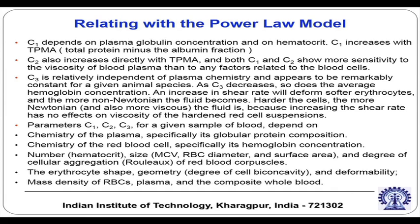C2 also increases directly with total plasma minus albumin (TPMA), and both C1 and C2 show more sensitivity to the viscosity of the blood plasma than to any other factors related to blood cells. C3 is relatively independent of plasma chemistry and appears to be remarkably constant for a given animal species. As C3 decreases, so does the average hemoglobin concentration. An increase in shear rate will deform softer erythrocytes and make the fluid more non-Newtonian; harder cells make the fluid more Newtonian.